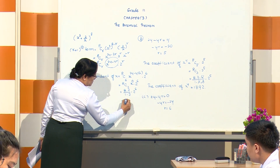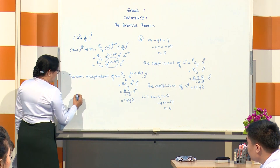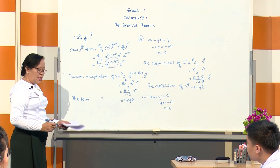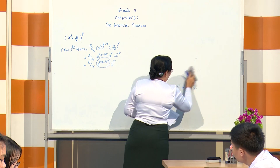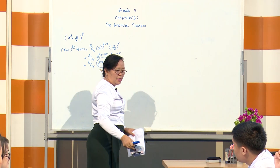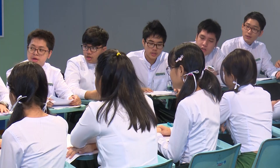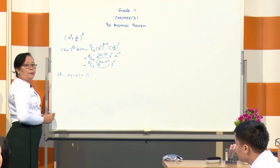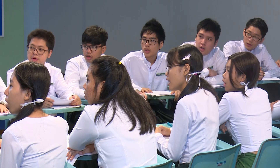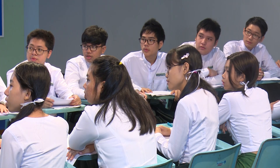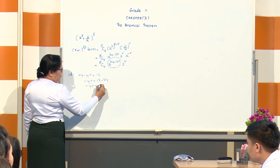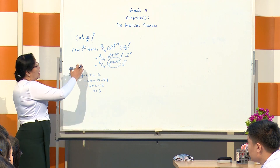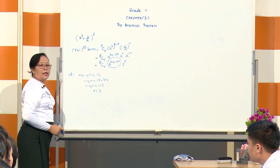This gives 28 times 64, which equals 1792. The term independent of x equals 1792.